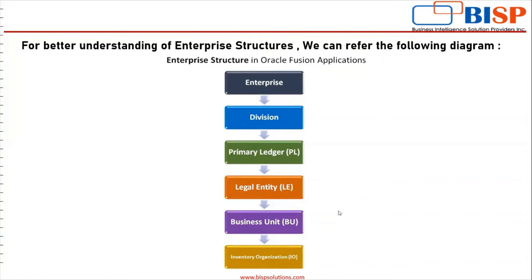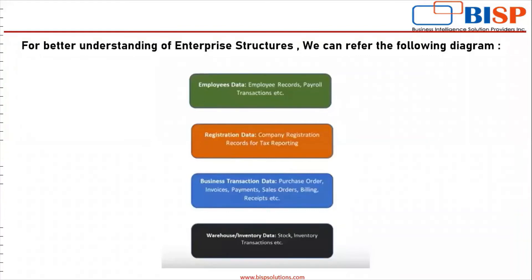Then it comes to business unit. Business units are created to record the business transactions that take place on a day-to-day basis. Under inventory organization, we keep the record of our inventory and warehouse data. Under the enterprise, we manage employee-related data, which consists of employee records, payroll transactions, etc. This employee data is maintained at the enterprise level by the HCM team, that is the Human Capital Management team. Under legal entity, we keep the company's registration details. Under business unit, we keep records of business transactions on a day-to-day basis. Under inventory organization, we keep records related to warehouse and inventory.